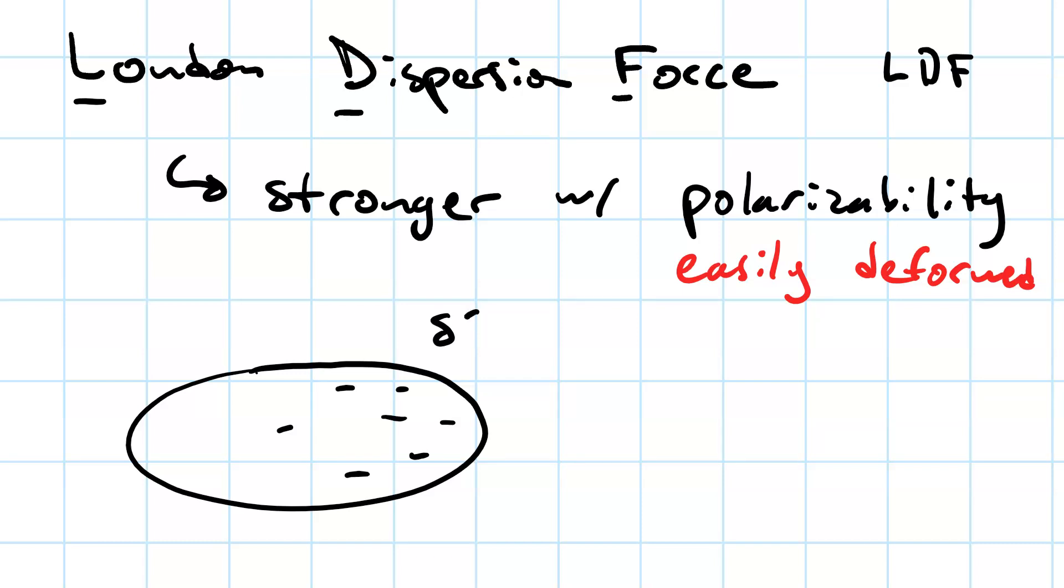This results in a small amount of negative charge on the side of the molecule that has more electron density, and a small amount of positive charge on the side of the molecule that has less electron density. And we call this phenomenon a transient dipole.